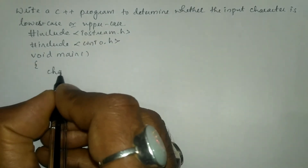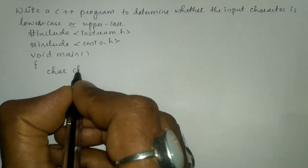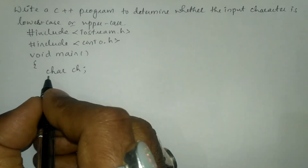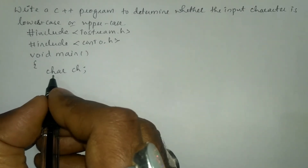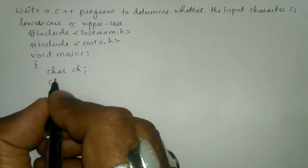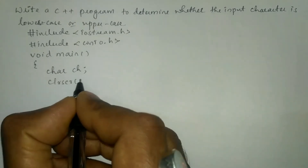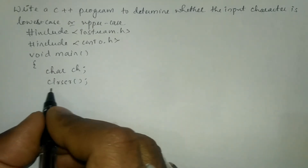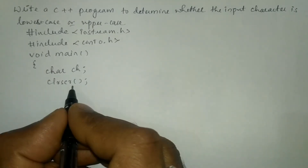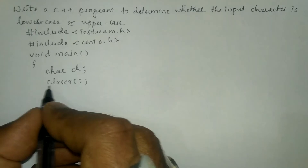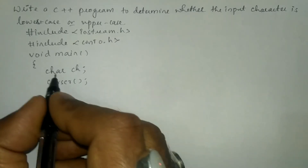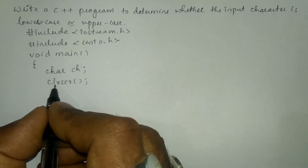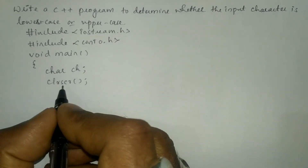Then we'll write the main function with a curly open brace. In the declaration section I am going to declare char ch — ch is a variable of type character. Then I'll write the clrscr function, which is used to clear the screen and is written after declaring all variables, so it is optional.